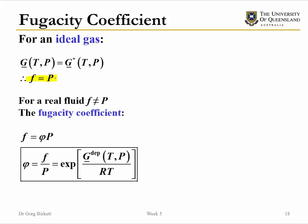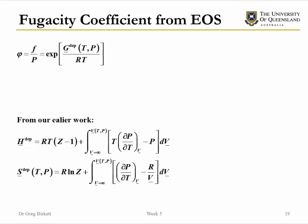We can relate the fugacity to the pressure by using something called the fugacity coefficient. Rearranging and using the previous relationship, the fugacity coefficient is equal to a collection of terms which includes the departure Gibbs free energy. To calculate the fugacity and the fugacity coefficient, we need to know how to calculate this G-departure term.